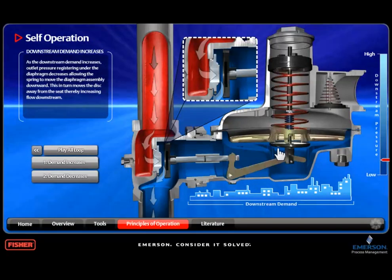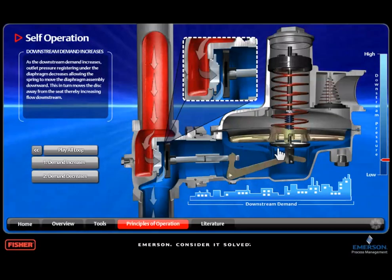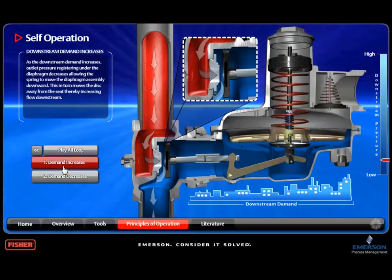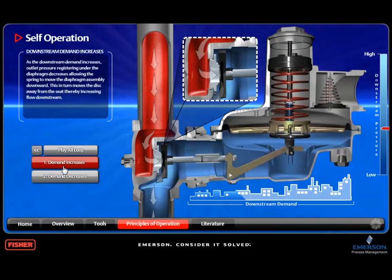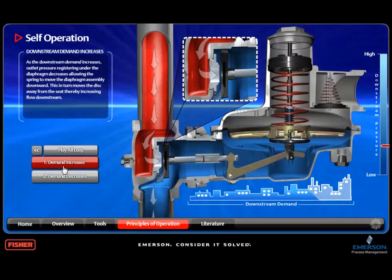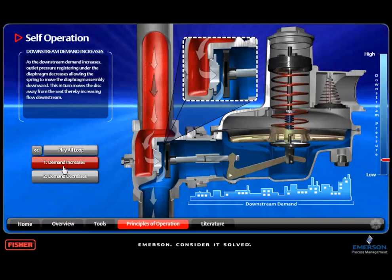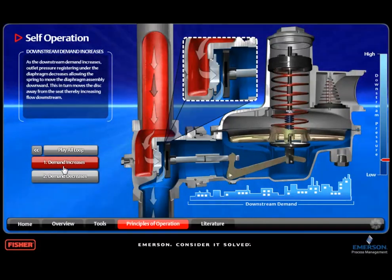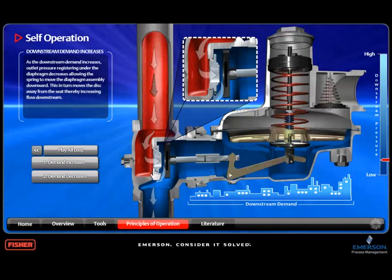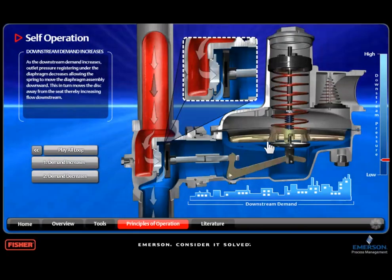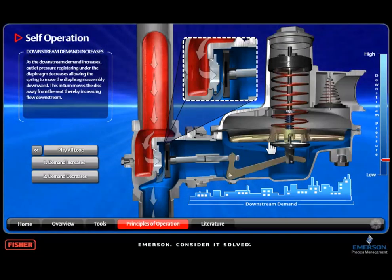Now that we understand what makes a regulator operate, let's look at what's happening inside the regulator while it's installed on your commercial building. If the regulator senses decreasing outlet pressure due to an increase in flow demand from your building's heater or other equipment, the subsequent force change on the diaphragm will move it downward and pull the valve plug away from the orifice, resulting in additional flow to match the increased demand.